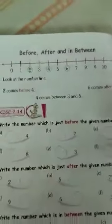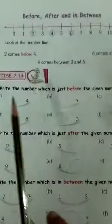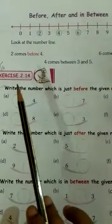Now, many times I have taught you before, after and between, I know you can solve this. Exercise number 2.14, you will write here CW and date, now you will start doing your class work.